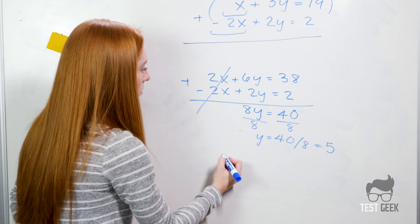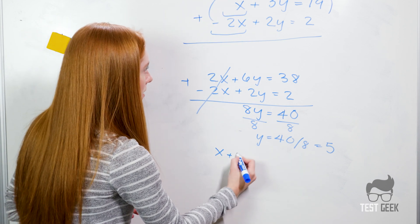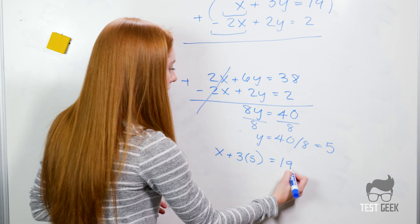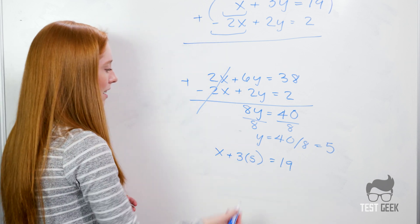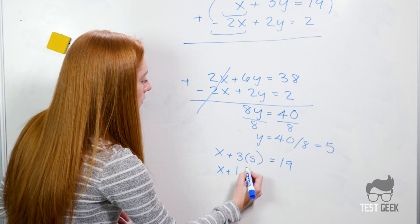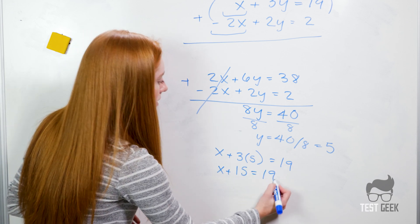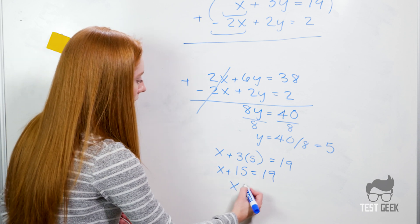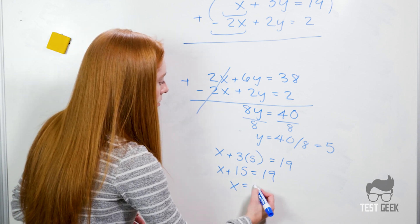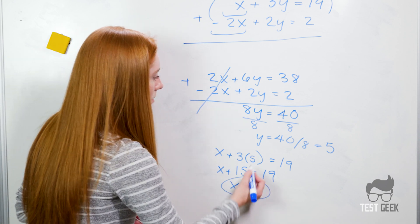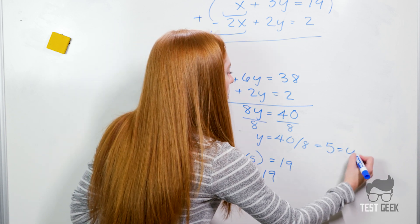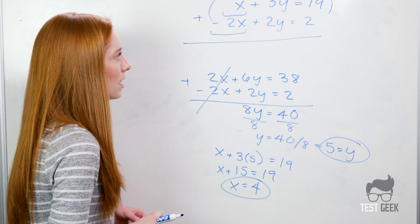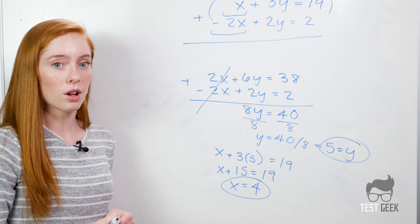We do x plus 3 times 5 equals 19. So we have x plus 15 equals 19. We subtract 15 from both sides and get x equals 4. So now we have both our y and our x variables. That's one option to solve this.